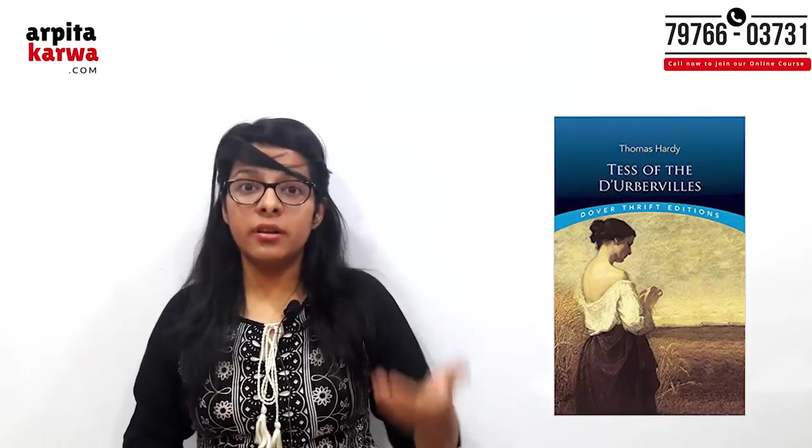Tess of the d'Urbervilles discusses sexual morals during the Victorian period. An important scene involves Tess writing a letter to Angel that slides under the carpet and goes unread. The novel talks not only about Victorian society but also about the condition of women and how females were treated during that era.